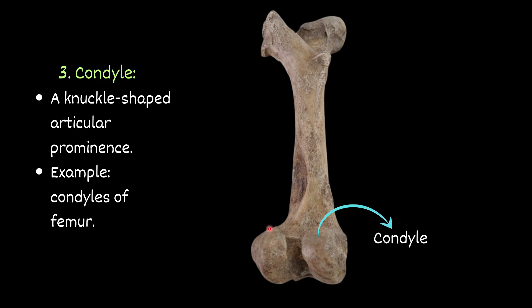Condyle — a knuckle-shaped articular prominence. For example, condyles of femur. You can see this is a condyle — this is the condyle of the femur at its distal end. These two are the condyles, knuckle-shaped articular prominences.